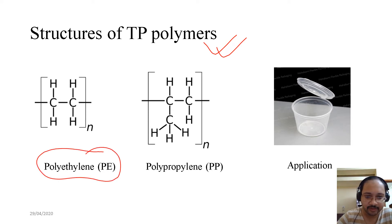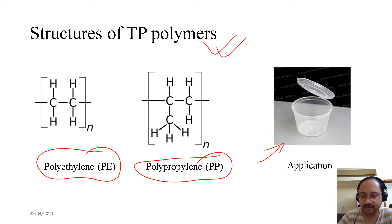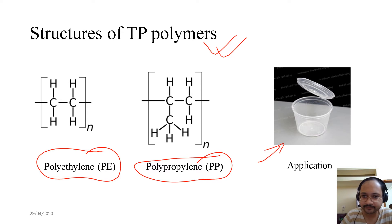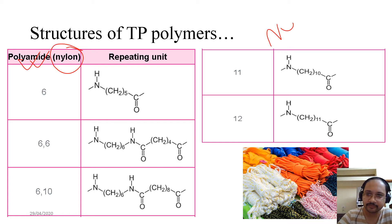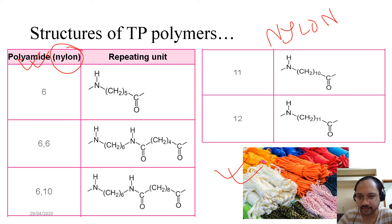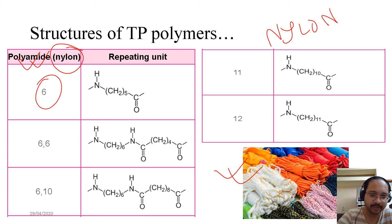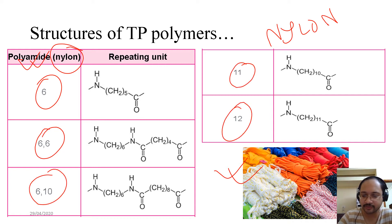Coming to structures of thermoplastic polymers: we have polyethylene and polypropylene, with applications including food containers we use every day. Another thermoplastic polymer is polyamide, commonly known as nylon — nylon ropes, nylon fibers. There are different variants of polyamide: polyamide 6, polyamide 6,6, polyamide 6,10, polyamide 11, and polyamide 12.